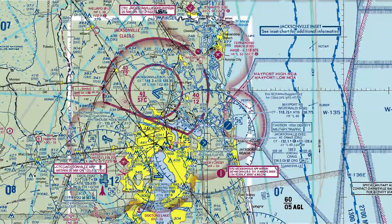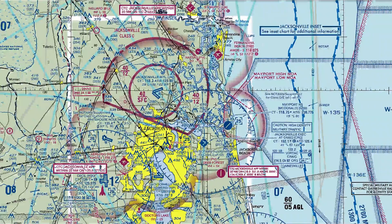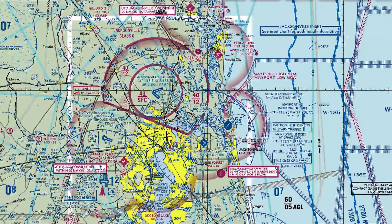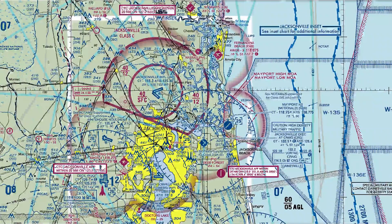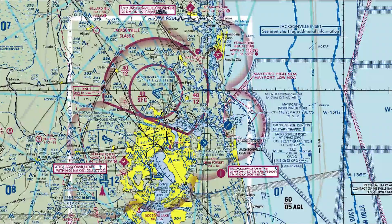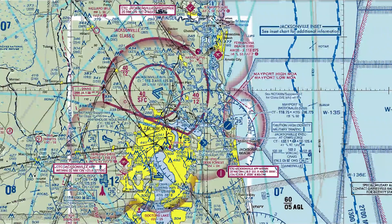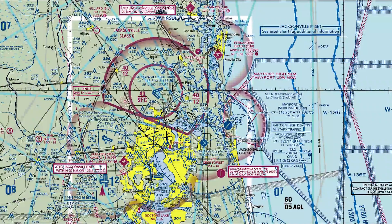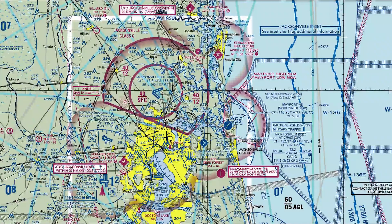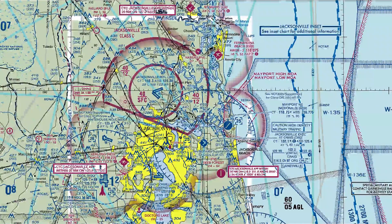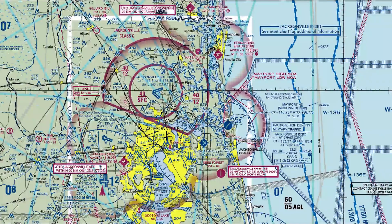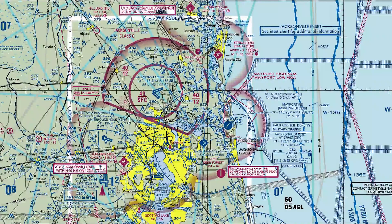Outside of that circle — like out over the water where it's not depicted by anything else, with no other airspace — this is called domestic en route, and it's 1,200 feet. Watch my cursor: inside the circle, Class Echo starts at 700 feet. Outside of it, Class Echo airspace starts at 1,200 feet.